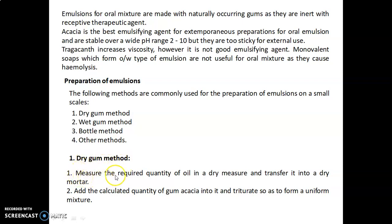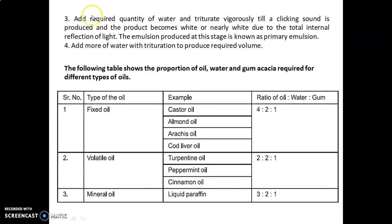In the dry gum method, first measure the required quantity of oil in a dry measure and transfer it into a dry mortar. Then add the calculated quantity of gum acacia and triturate to form a uniform mixture. Next, add the required quantity of water and triturate vigorously until a clicking sound is produced and the product becomes white or nearly white due to total internal reflection of light. The emulsion produced at this stage is known as the primary emulsion.